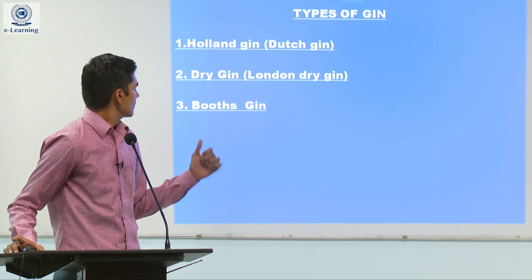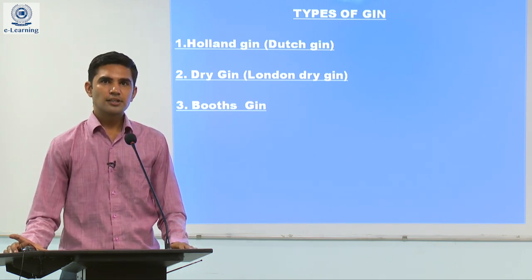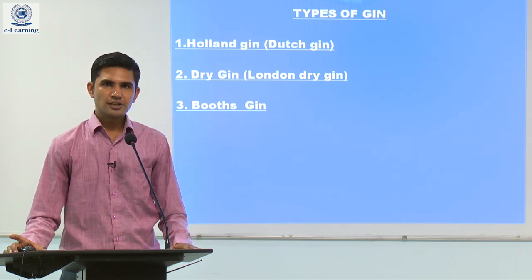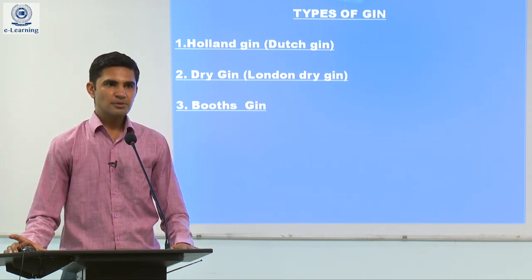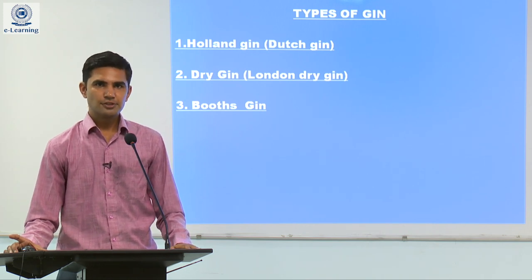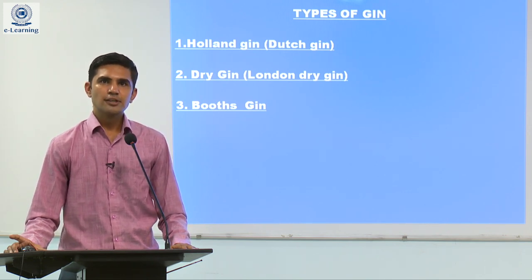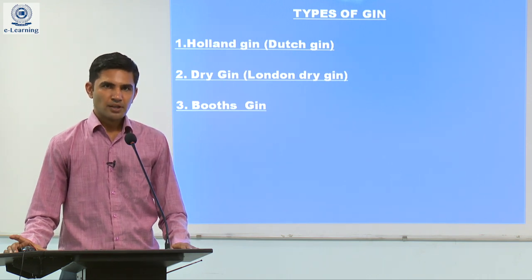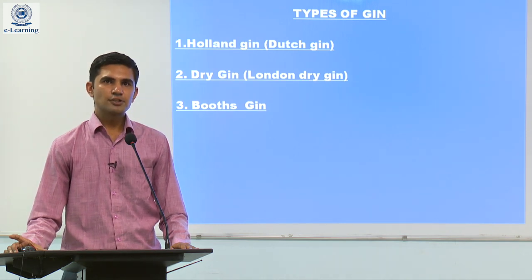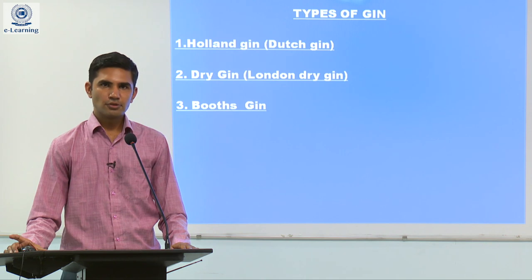Holland Gin uses the pot still method, with distillation done two times. Then we have London Dry Gin — another name is Dry Gin. The term was adopted by America and other countries. It is a little different from Holland Gin in its manufacturing process. In London Dry Gin, we use patent still method first, then pot still method. It does not use malted barley — instead it uses 75% barley, 15% corn, and 10% rye and other grains.